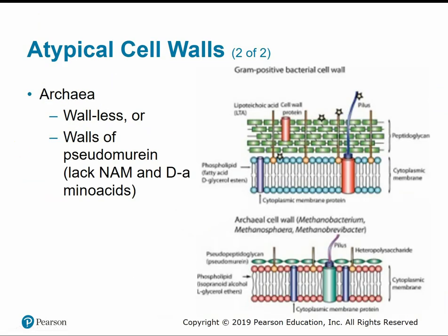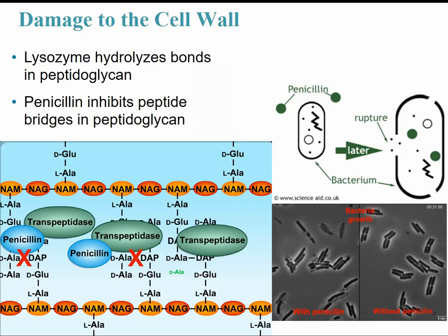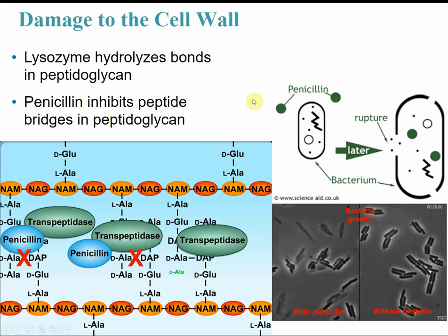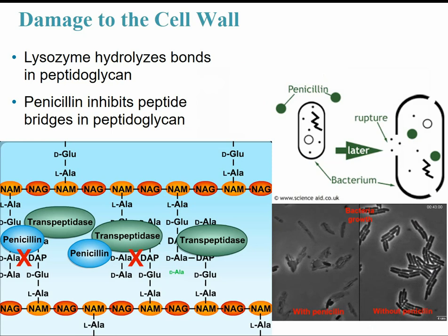Archaea also have atypical cell walls, but you're much less likely to encounter archaea. They're generally either wall-less or have a pseudopeptidoglycan cell wall. A normal gram-positive has peptidoglycan represented by the green bricks, while an archaeal cell wall still has a cell membrane and phospholipid bilayer, but its cell wall is slightly different — pseudo meaning fake, so it's like a fake peptidoglycan. Any damage to the cell wall can affect overall cell function. Lysozyme can break down the chemical bonds in peptidoglycan, chemically digesting that molecule.